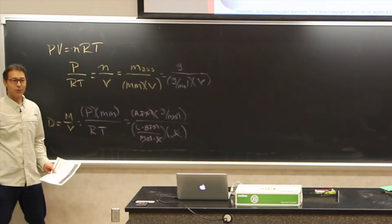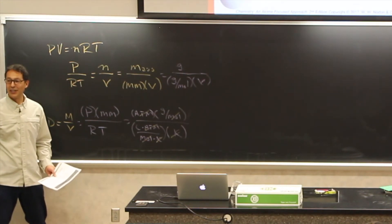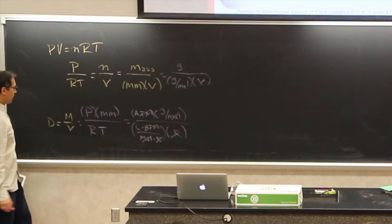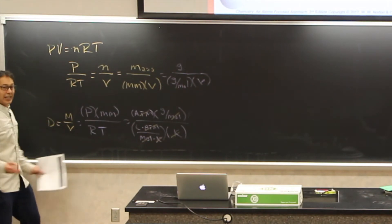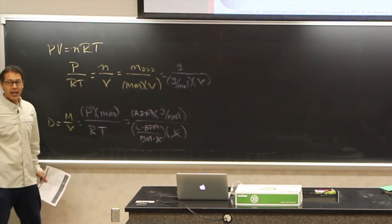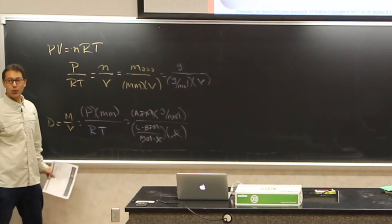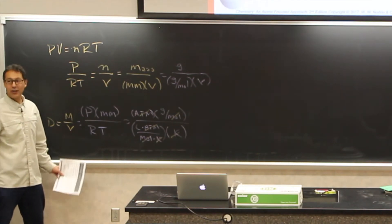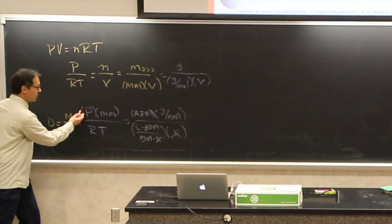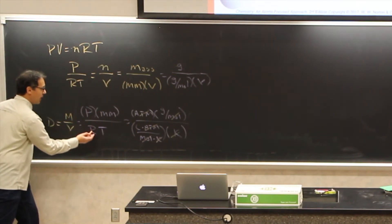There are too many m's: we've got moles, we've got molarity, we've got molar mass, and then because we're dealing with gases, we have millimeters. It's like we need more letters in our alphabet. On a test, I would not ask you to derive this. I just wanted to show you that it can be done so that you might believe the units do actually work.